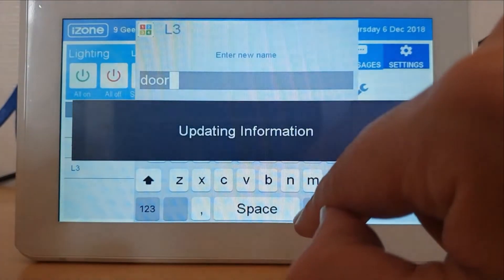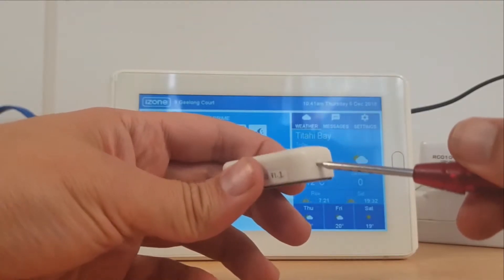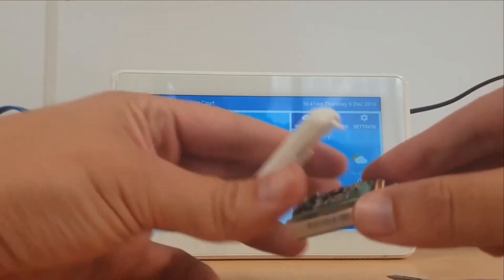We can rename this to door for future reference. Step 2: Pairing the reed switch. Open up the reed switch and remove the battery tab.